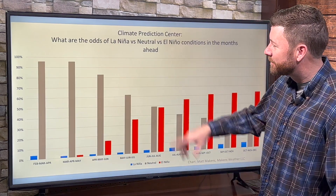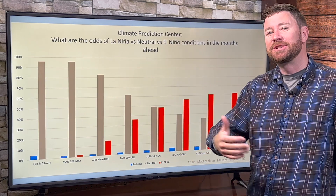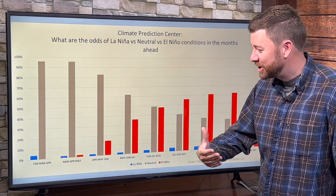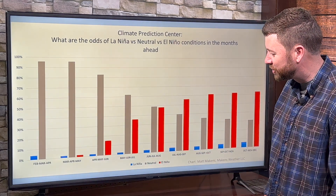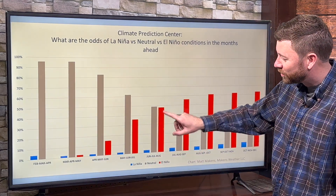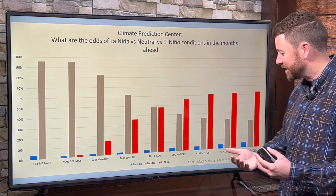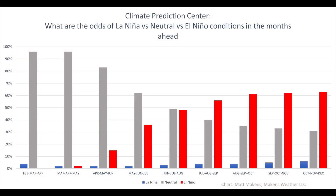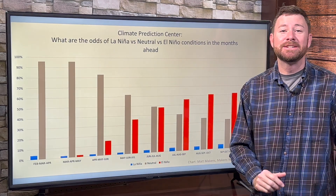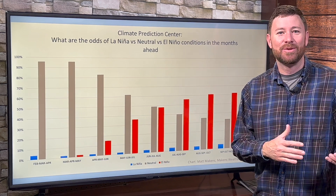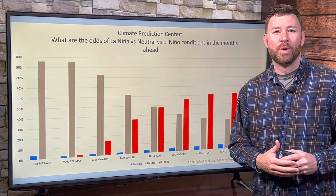Here's a forecast from the CPC on the odds of neutral versus El Nino conditions, with seasons listed in three-month chunks. June, July, August are likely balanced between neutral chances and El Nino chances. By October, November, December the neutral pattern is much less likely than an El Nino — El Nino odds are climbing above 60% at that point. Still not locked in, not a guarantee. We'll see how things progress.